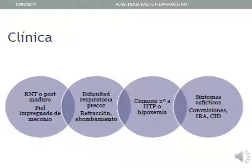Esta gráfica permite apreciar las diferentes presentaciones clínicas del síndrome de aspiración meconial, yendo de la forma más leve a la más severa. En el primer cuadro tenemos un recién nacido a término con signos de postmadurez y piel impregnada de meconio. Se agregaría dificultad respiratoria precoz con retracciones xifoideas e intercostales leves o graves y abombamiento del tórax. En casos más severos se agrega cianosis por hipertensión pulmonar o hipoxemia, y en el grado más severo el recién nacido presentaría síntomas asfícticos, convulsiones, insuficiencia renal aguda y coagulación intravascular diseminada, entre otros.